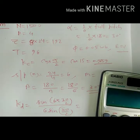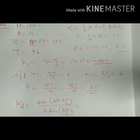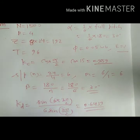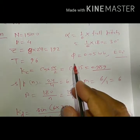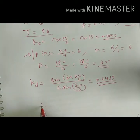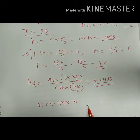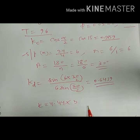Kd equals sine(90) divided by 6 times sine(15 degrees), which gives 0.6439. So we have Kd, Kc, and T_ph. Now we can find the EMF using the formula E = 4.44 × f × phi × T_ph × Kc × Kd. Frequency f is not given, so we calculate it.